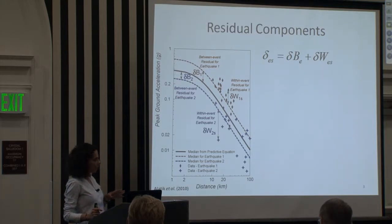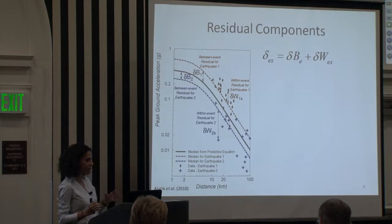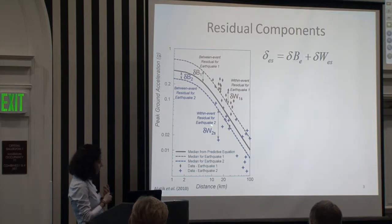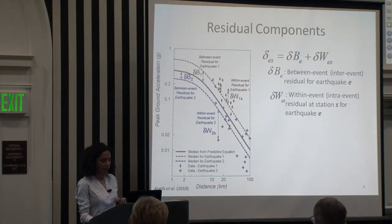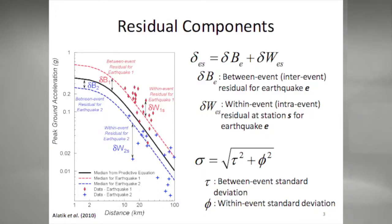We have the total residual, which is the misfit from the observed ground motion with respect to the GMPE for an earthquake E at a station S. This is usually divided into two components: the between-event residual, which is the average misfit for one earthquake, and the within-event residual for each recording — the misfit between the recording at a particular station and the event-specific median. Delta BE is the between-event residual, also called inter-event residual or event term. Delta WES is the within-event residual at station S for earthquake E. The standard deviations are tau (between-event), phi (within-event), and sigma (total).